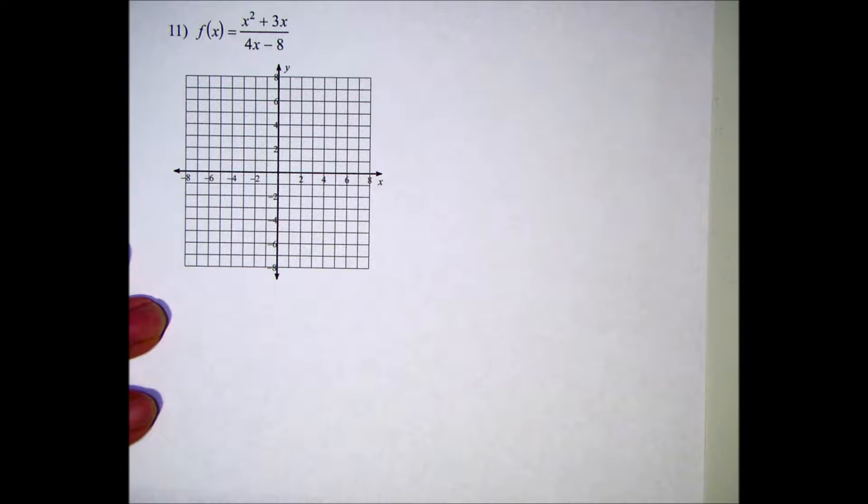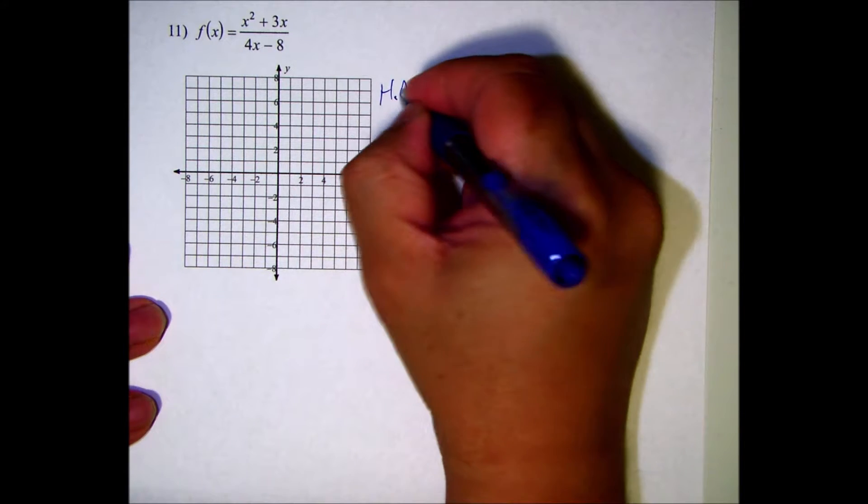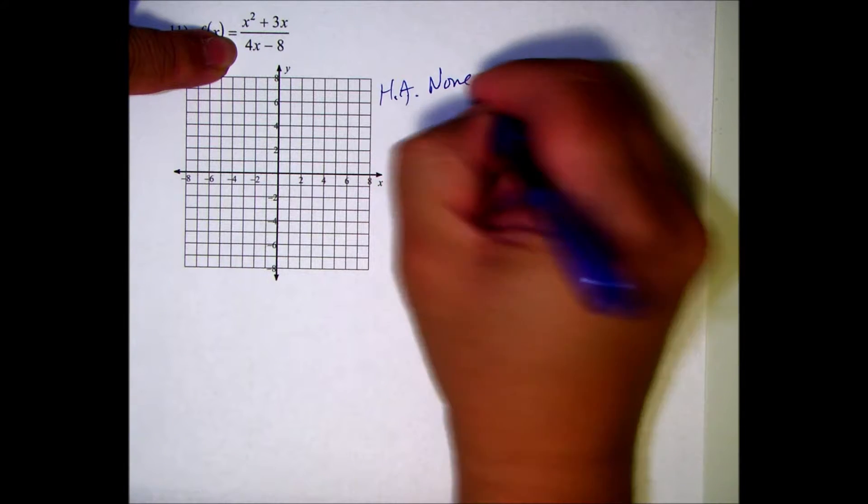All right, this is number 11, last one I'm going to do for this worksheet. First, find the horizontal asymptote. The degree of the numerator is higher than the degree of the denominator, so there is no horizontal asymptote.